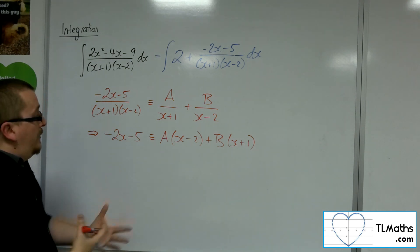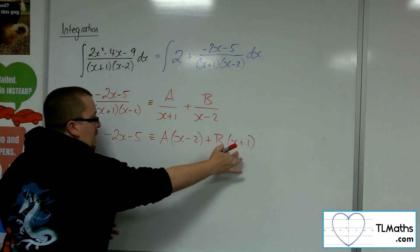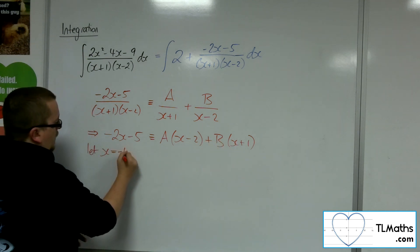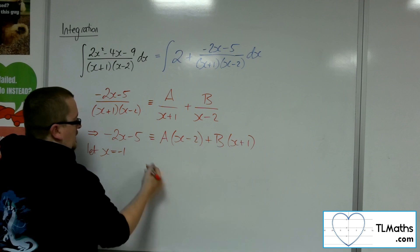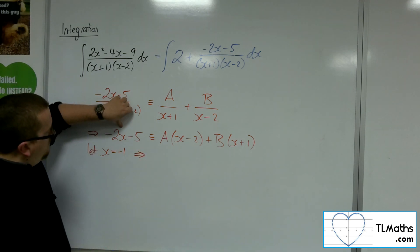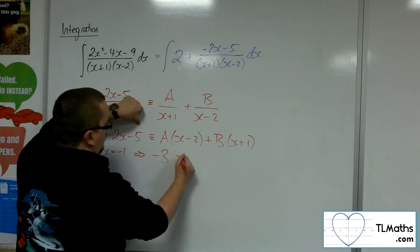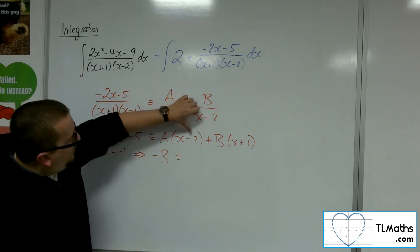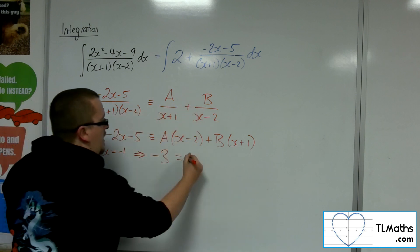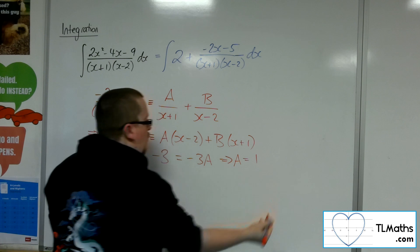So now let's start choosing values of x to knock out brackets. So if I let the x be minus 1, that will knock out that bracket there. So we've got minus 2 lots of minus 1, well that's just 2, take away 5 is minus 3. And then we've got minus 1, take away 2, so that's minus 3, so minus 3a. So that means the a would have had to have been 1.